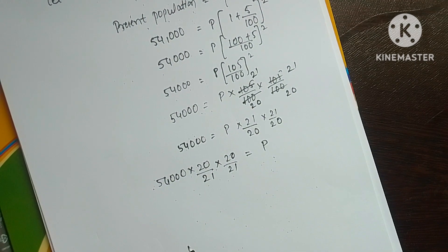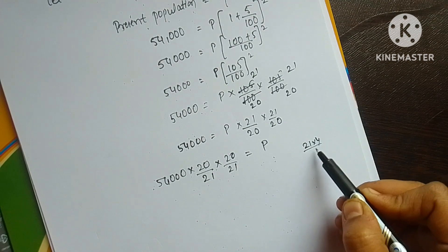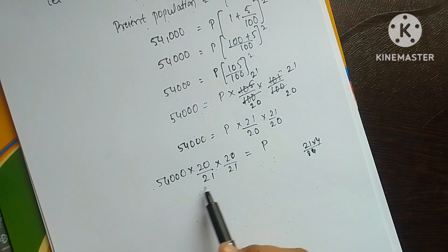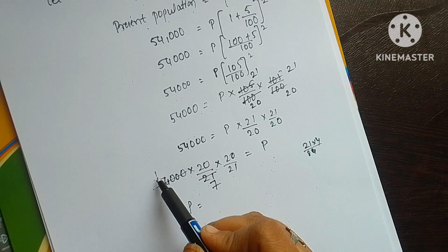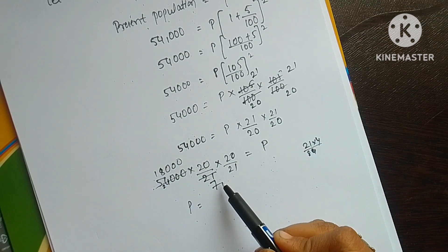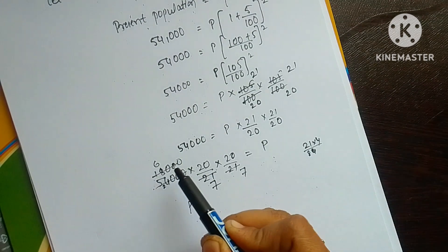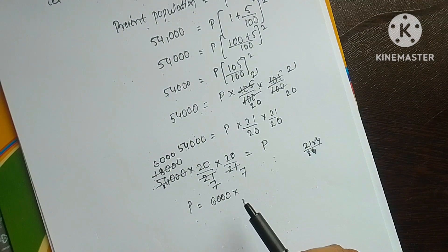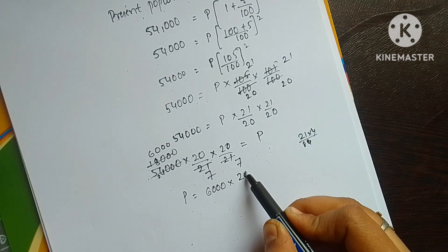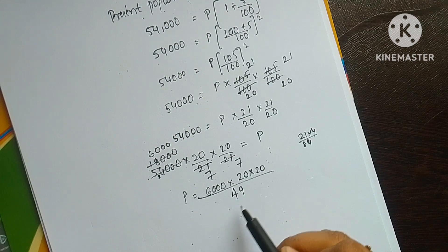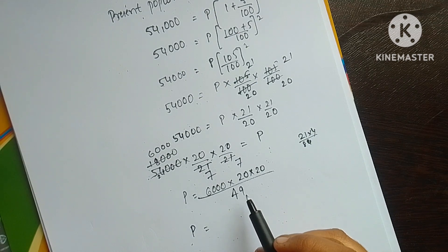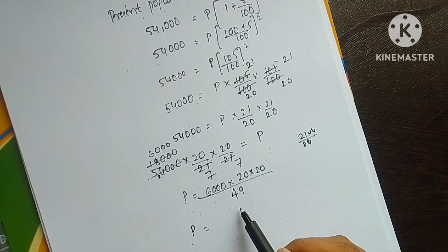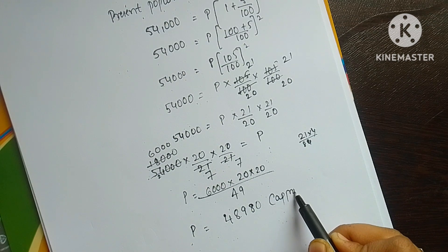After cancellation: 3×7 = 21, 3×1 = 3, 3×8 = 24, and further simplification gives 6,000 into 20 into 20 divided by 7×7 = 49. After completing the calculation, we get approximately 48,980 as the population in 2001.